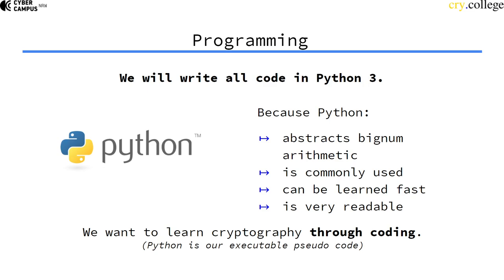We want to learn cryptography through coding, and for that Python is the ideal tool because it's very readable and it abstracts away a lot of the things that we don't care about. What we're doing is essentially writing our cryptographic primitives in pseudocode, but the pseudocode is actually executable because it's valid Python code, and then we can actually use those primitives to play around with them.